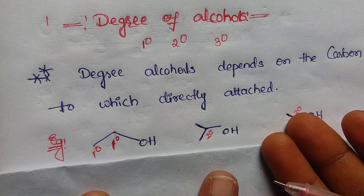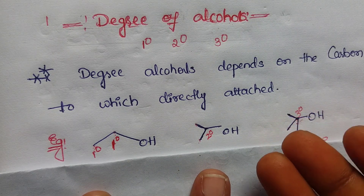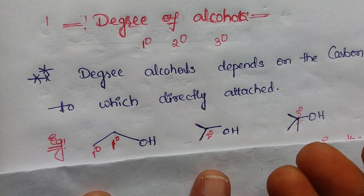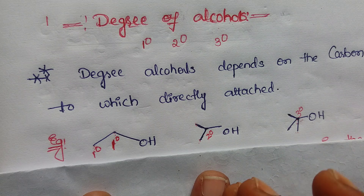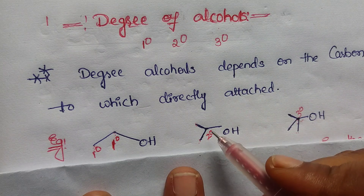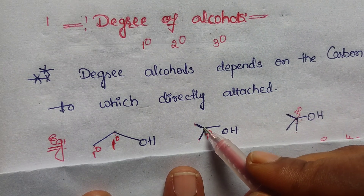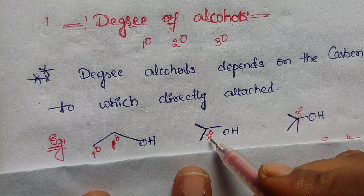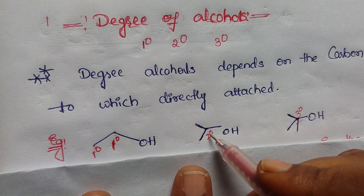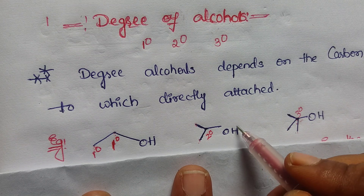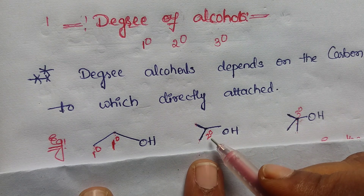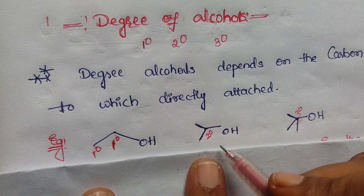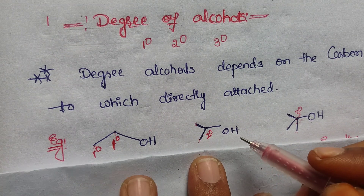Secondary alcohols means the hydroxyl group is attached to the secondary carbon, and that is called secondary alcohols. Here this carbon is attached to two other carbon atoms, so it is a secondary carbon. Here the hydroxyl group is attached to the secondary carbon, so it is secondary alcohol.